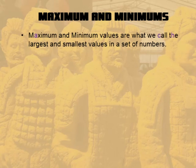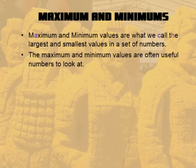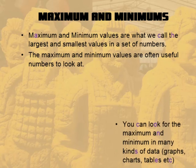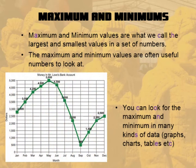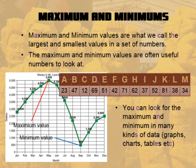Maximum and minimum values are what we call the largest and smallest values in a set of numbers, and they are often useful numbers to look at. For example, the maximum amount of money in someone's bank account might be $5,000 and the minimum just $500. Looking at another set, the maximum is 81 and the minimum is 12.